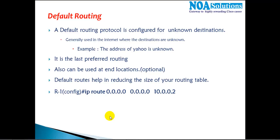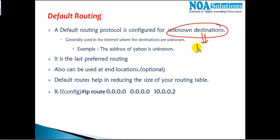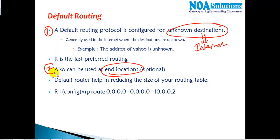In this section we'll see how to configure default routing and when and where exactly we use it. Default routing is used in two scenarios: the first scenario is for unknown destinations. If you want to route any packet to unknown destinations like the internet, we use default routing. It can also be used at end locations.